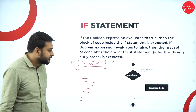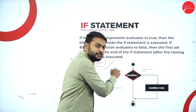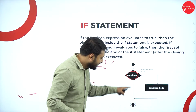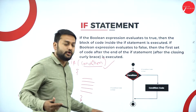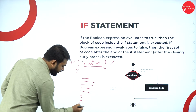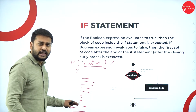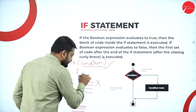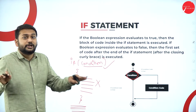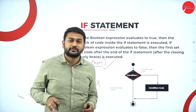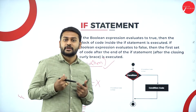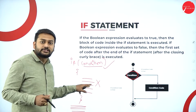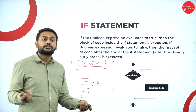Looking at the flowchart: I have a condition represented as a rhombus. If the condition is true, the code block will be executed; otherwise it will skip to the next set of code. Suppose after this block I have more lines — if the condition is not true I skip that part and execute the next code.